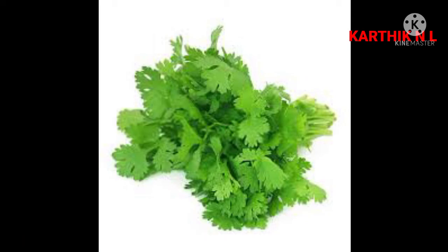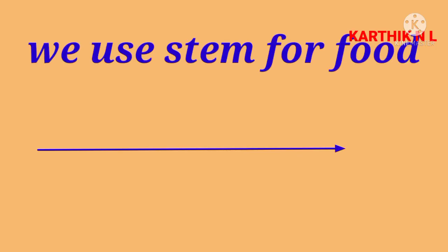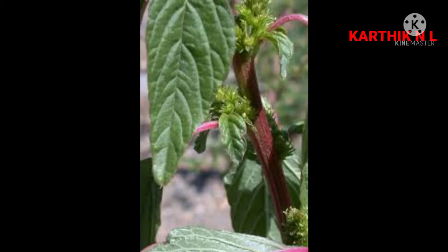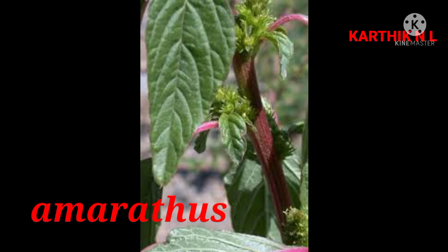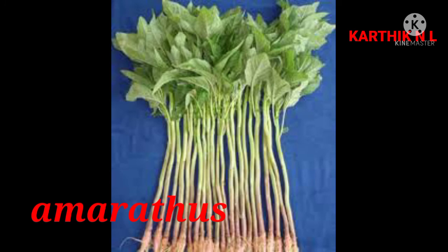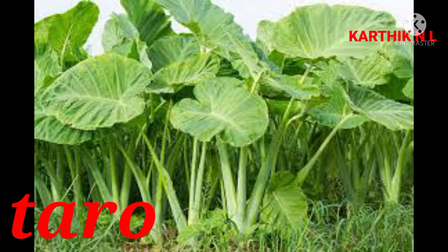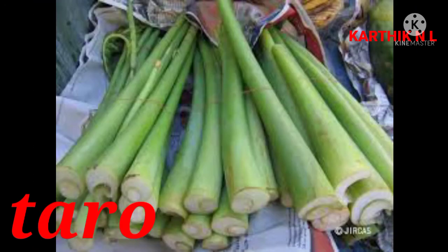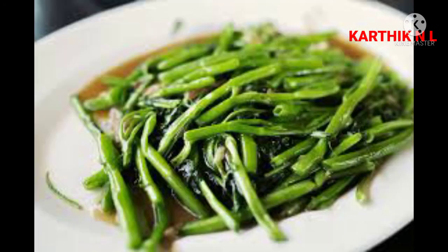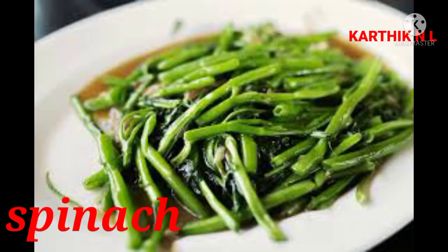Children, we use stem for food — plants' stem for food. Which are they? For example, amaranths, taro — you know that, you have already seen taro — and spinach, etc.